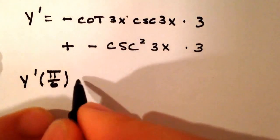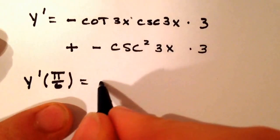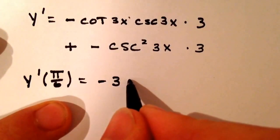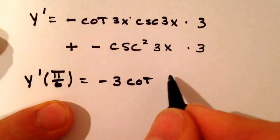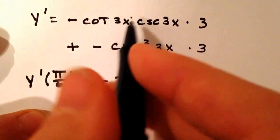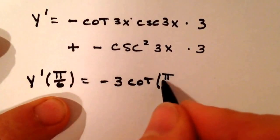Okay, so when we plug in the π/6, here's what it's going to look like. I'm going to move this 3 up front. Negative 3 times the cotangent of, hi Stella. When you plug the π/6 into the 3x, you get 3 times π/6, which is π/2.